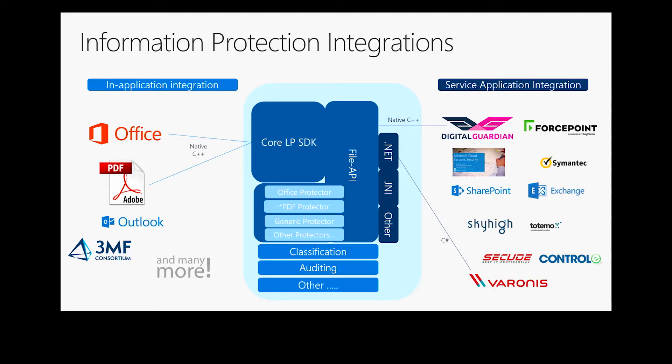Looking more at the integration — this is a high-level overview of the SDK components. The different components are targeted towards different platforms. On the left side, our core SDK is looking at applications like Office, PDF readers such as Adobe or Foxit, and Outlook. On the right side, we look at service applications — DigitalGuardian, ForcePoint, any type of server or client DLP — which would use our file API.